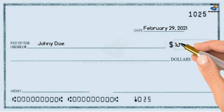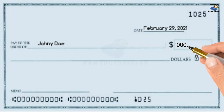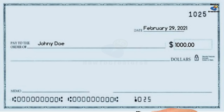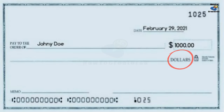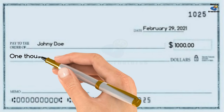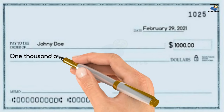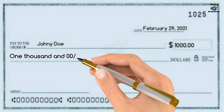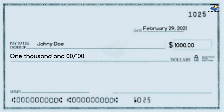Amount in numeric form: put 1000 in the box right after the dollar sign on the same line. Make sure to include the decimal part.